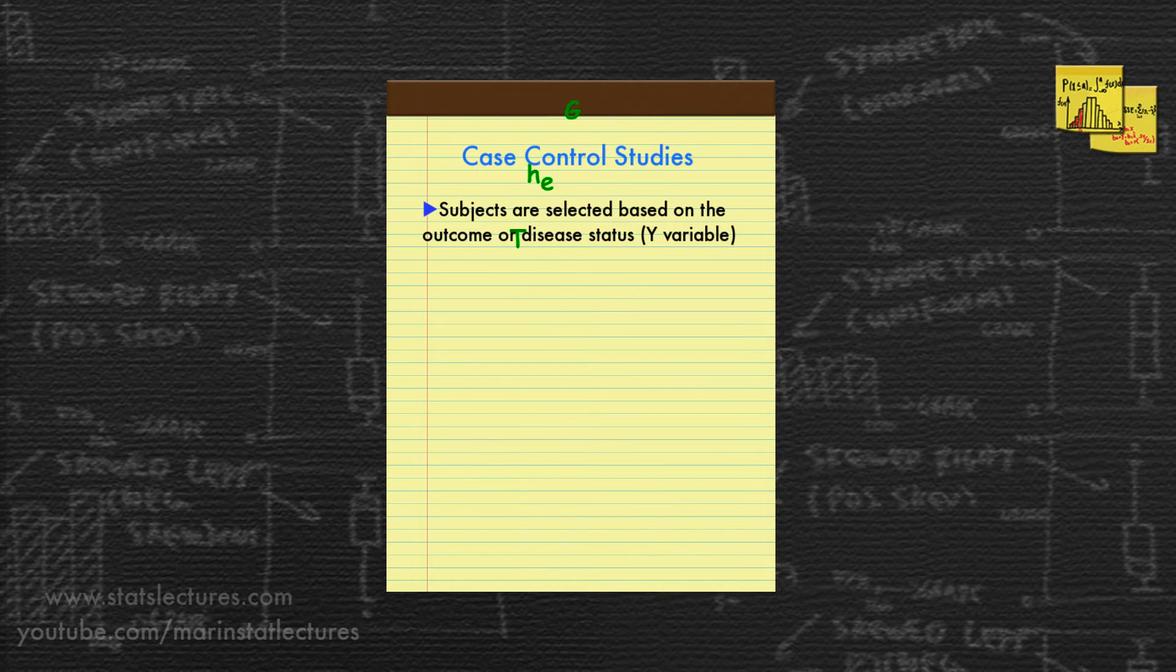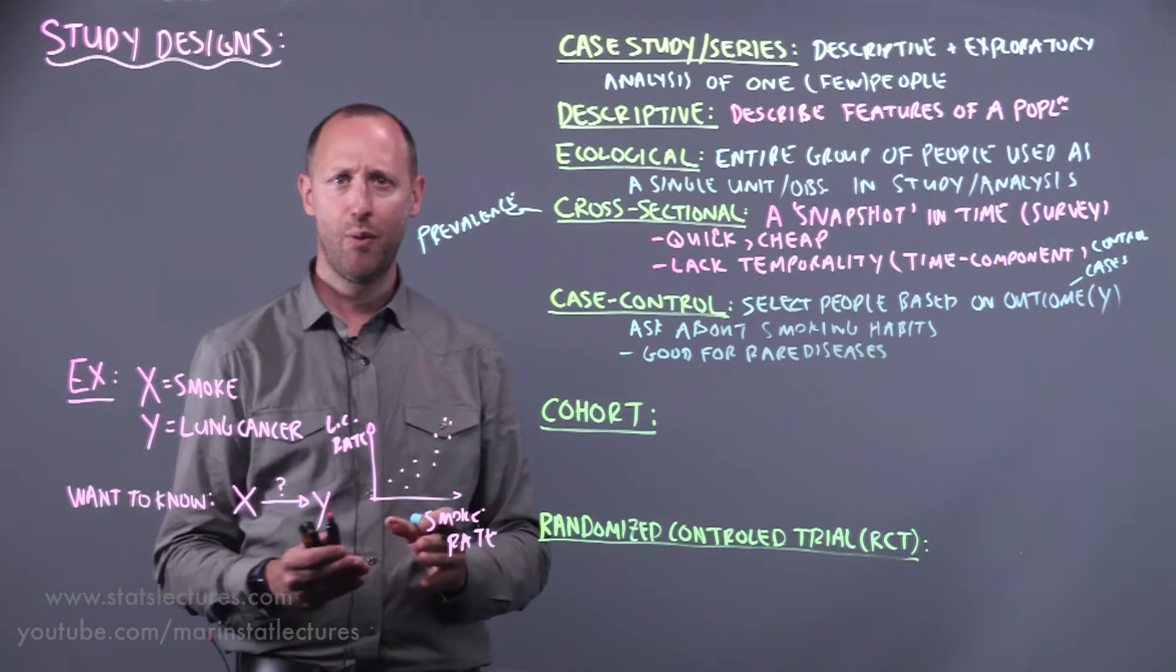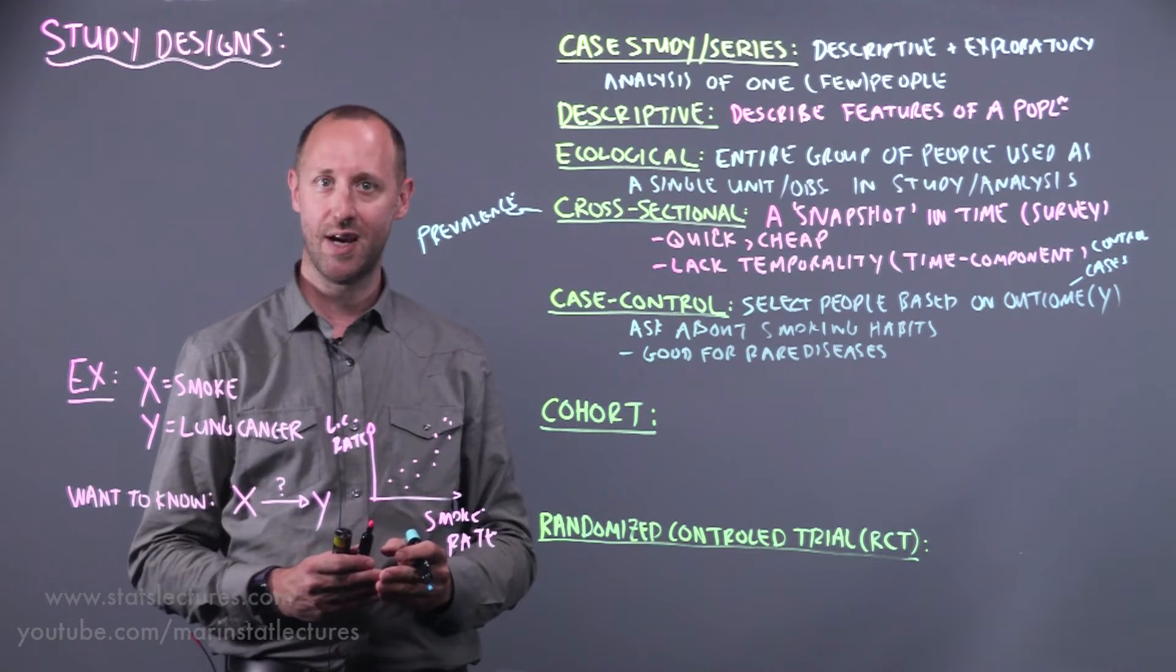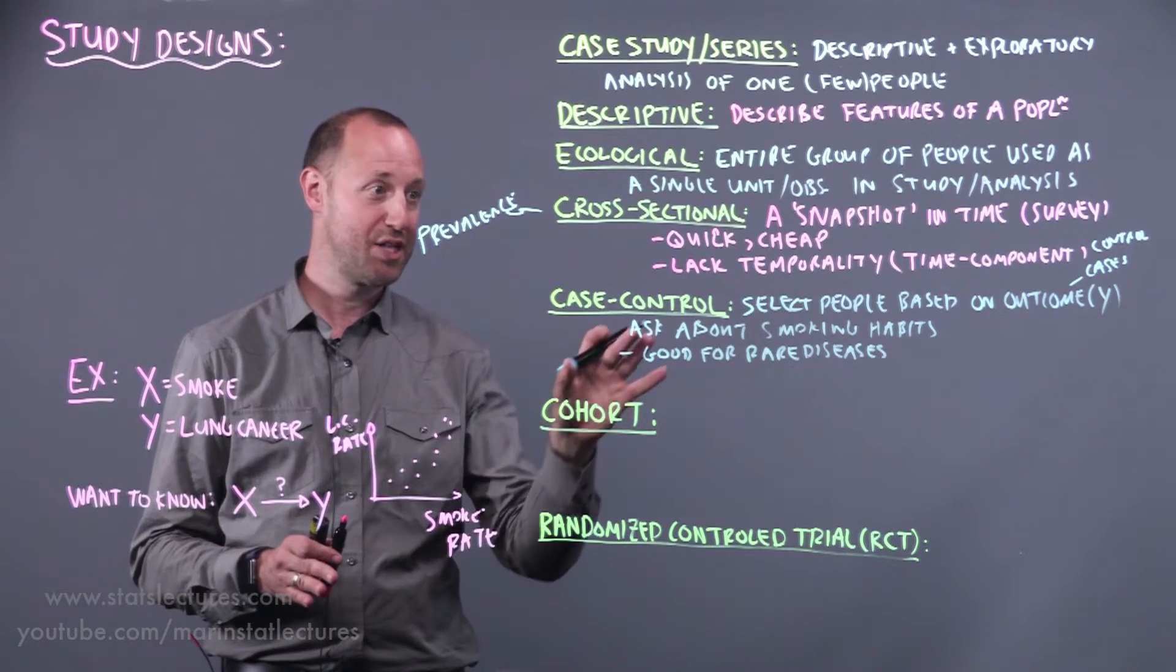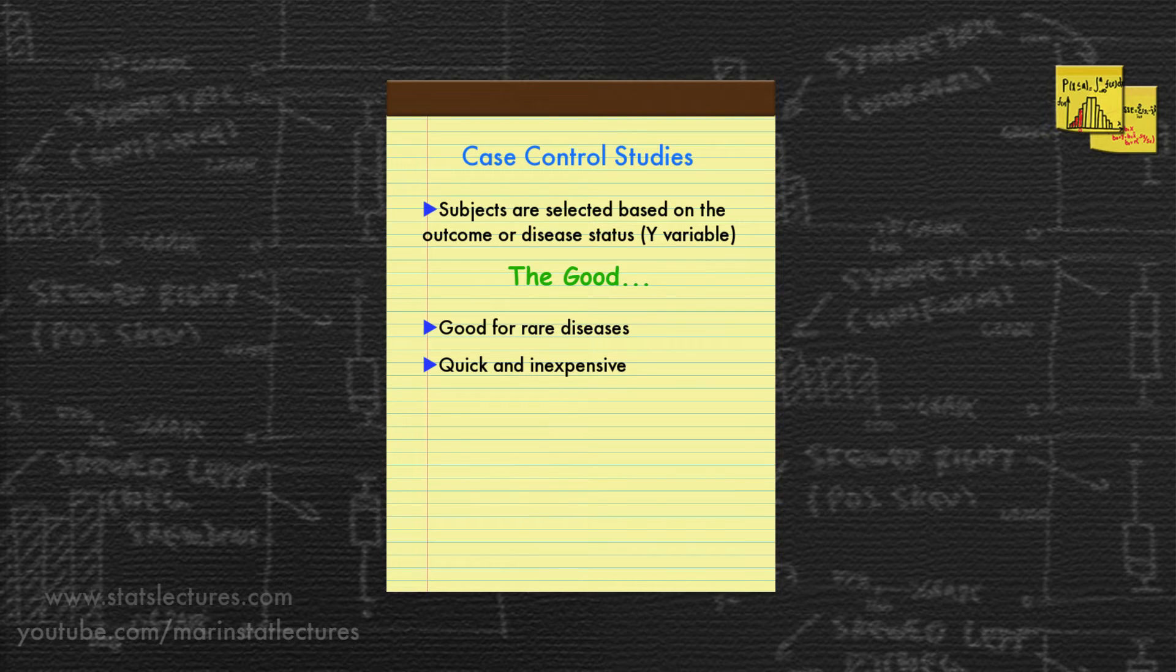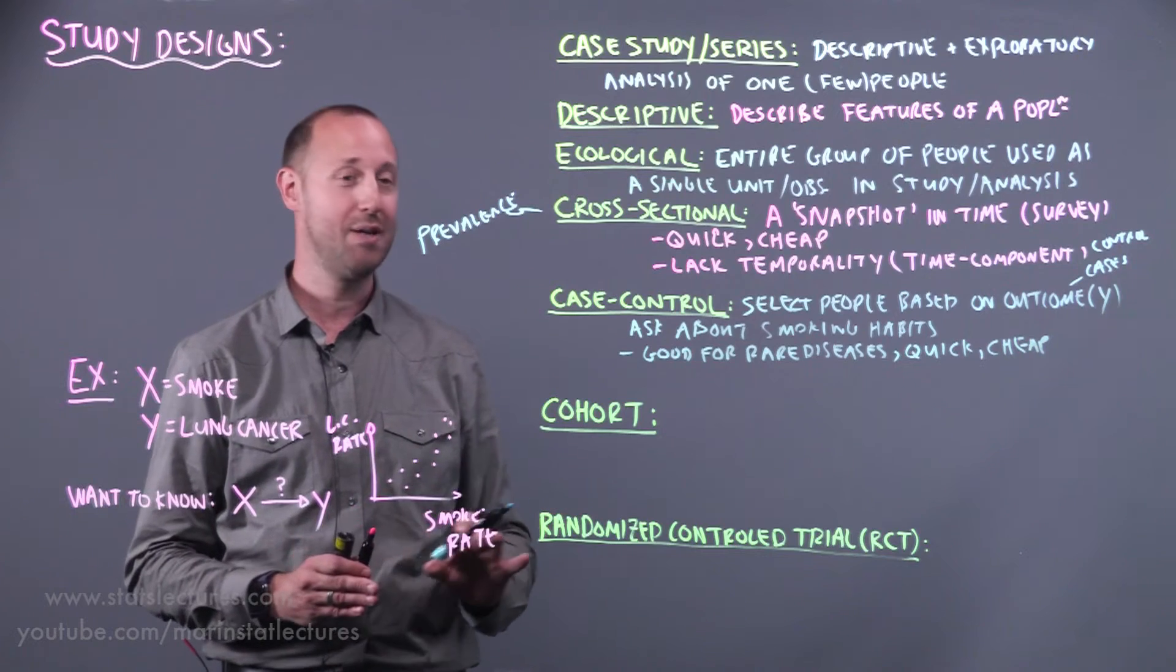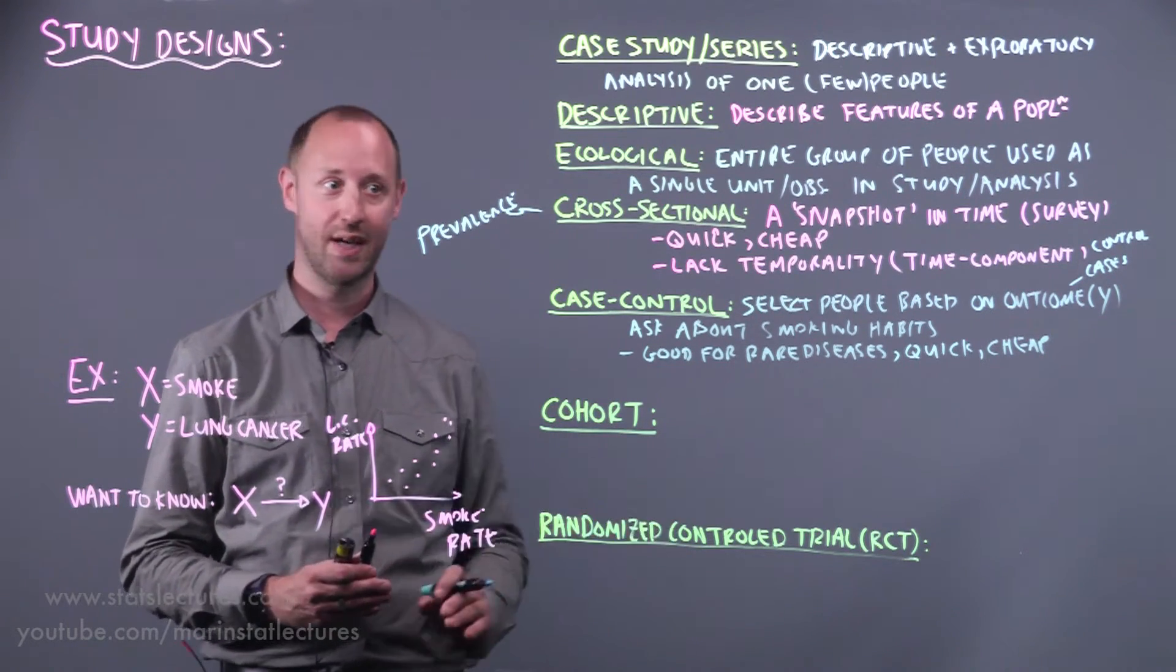First let's mention what's good or works well about these. They're good for rare diseases. If we wanted to study some disease and it's not very common, if we do something like a cross-sectional design we might not capture many people with that disease and our data might not actually be good at trying to address the research question we're interested in. They're also relatively quick and cheap, and again this is in the context of the research world where nothing is quick and cheap, but they're quicker and cheaper than say something like a cohort, which we're going to get to in a moment.